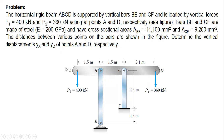As we can see from the figure, bars BE and CF are made of steel with a given modulus of elasticity, and have cross-sectional areas of 11,100 mm² for BE and 9,284 mm² for CF. The distances between various points are shown in the figure: 1.5 m, 1.5 m, and 2.1 m. The length of bar BE is 3 m, while for CF it is 2.4 m.